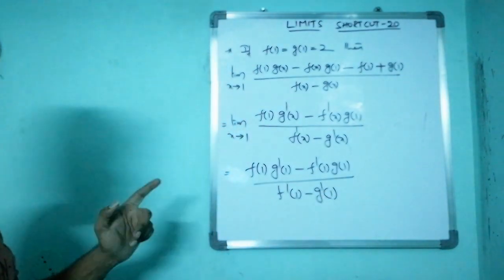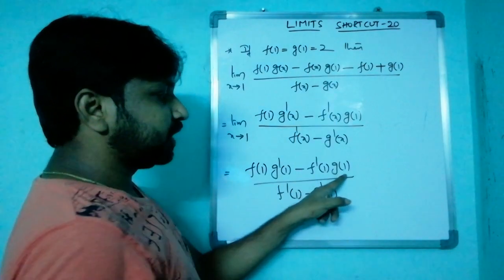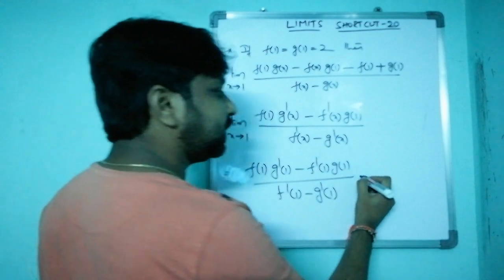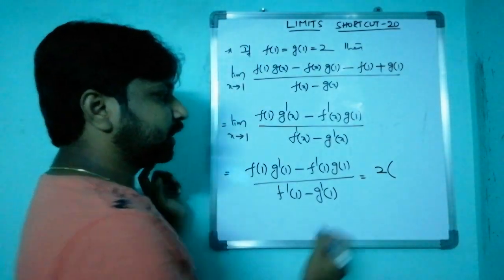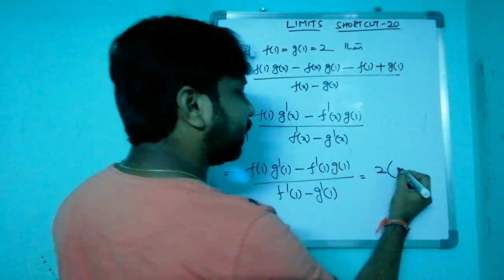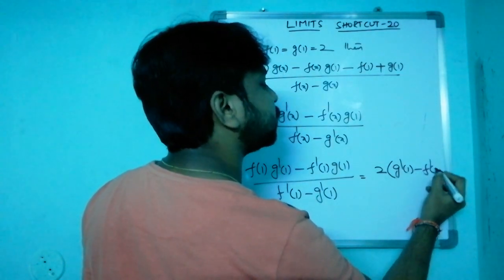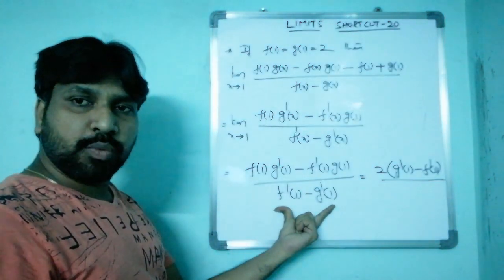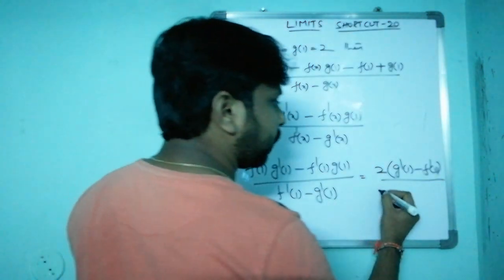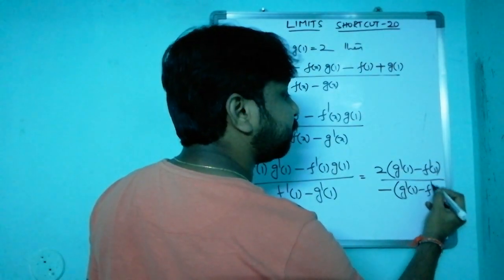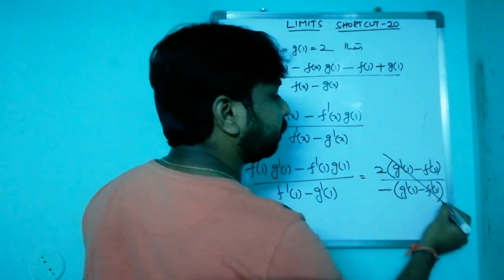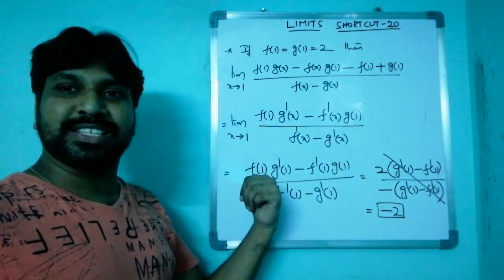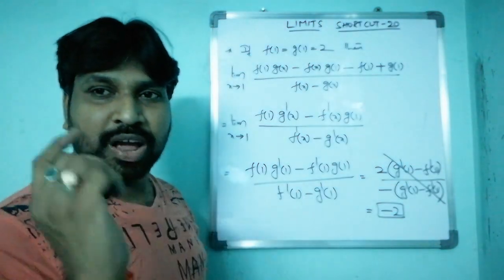Now f(1) = 2 and g(1) = 2, so we can factor out 2 from the numerator: 2·[g'(1) - f'(1)]. In the denominator, f'(1) - g'(1) = -[g'(1) - f'(1)]. These cancel, giving 2 / (-1) = -2. The answer is -2. A very good question!